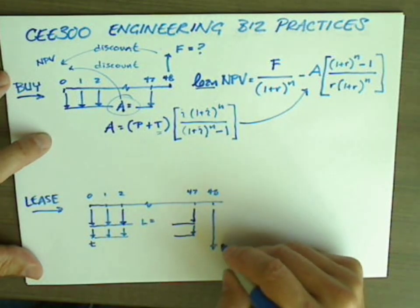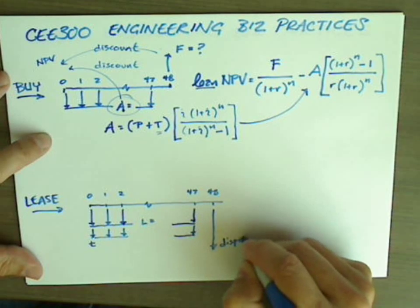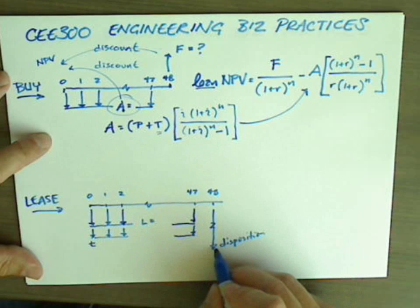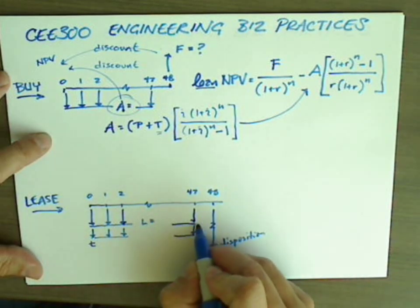And then we mentioned in the last video that there could be a disposition fee. Now, I've drawn this arrow as if it was really long. Probably the disposition fee is more than the lease payment. It might even be more than the lease payment and the taxes.